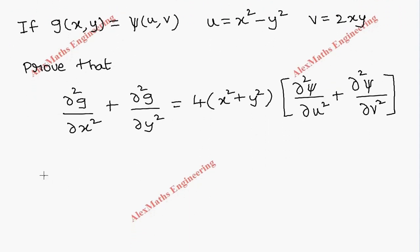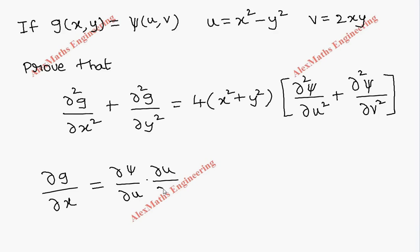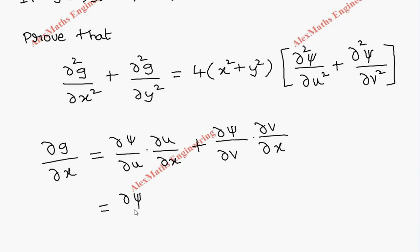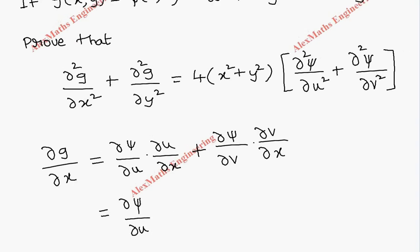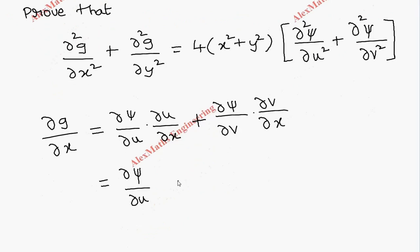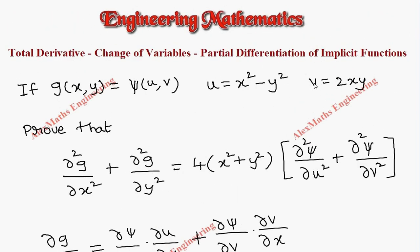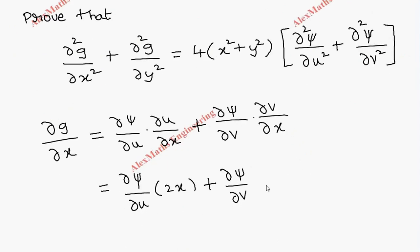Now let's find ∂g/∂x. Since g is in terms of u and v, it is: (∂ψ/∂u)(∂u/∂x) + (∂ψ/∂v)(∂v/∂x). Substituting: ∂u/∂x = 2x, so we write ∂ψ/∂u · 2x. And ∂v/∂x = 2y, so we add ∂ψ/∂v · 2y.